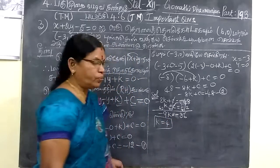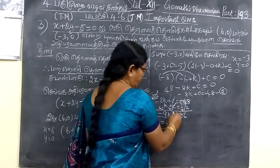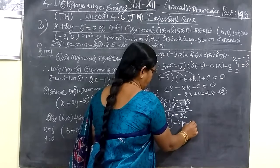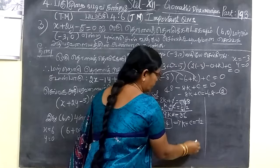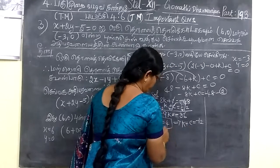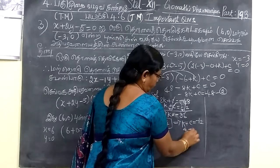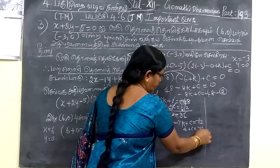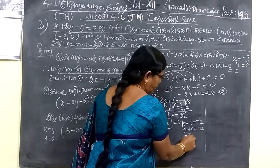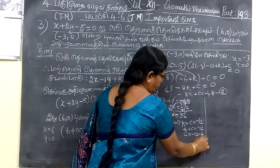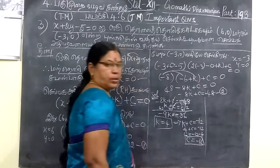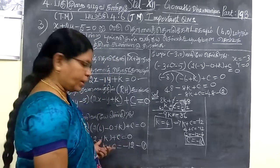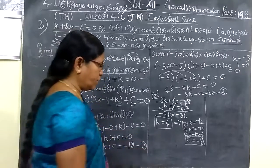K value is 4. Now you find c value. Also which implies k plus c equal to minus 1. K value is 4, so 4 plus c equal to minus 1. Therefore c equal to minus 1 minus 4. So c equal to minus 5. C value is minus 5.